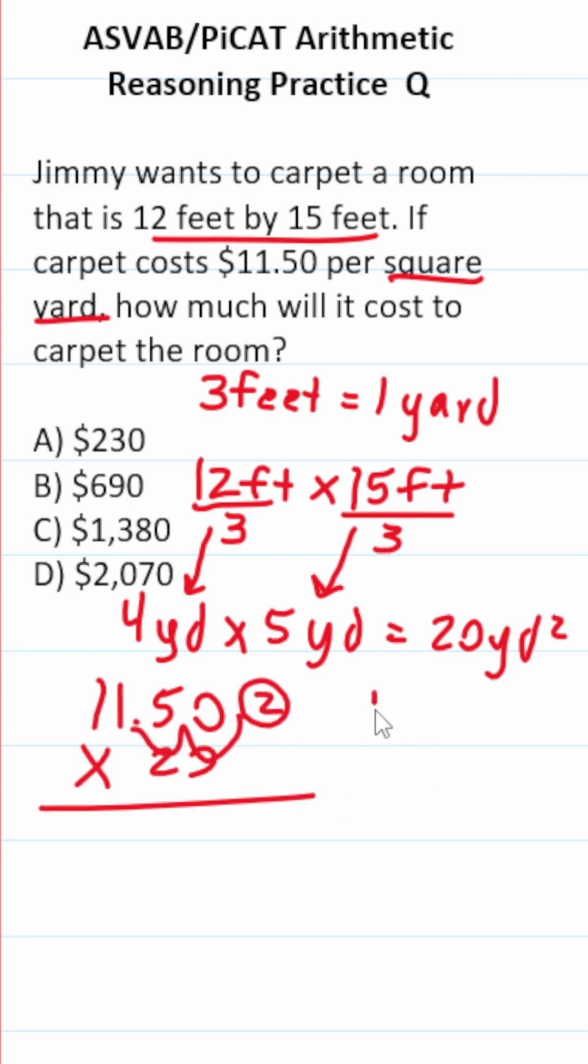Move the decimal 2 places to the right to make this $11.50 times 20, with 2 decimals to move back to the left later. 0 times these digits gives you zeros. Before we start multiplication with this 2, we have to add a 0 placeholder.